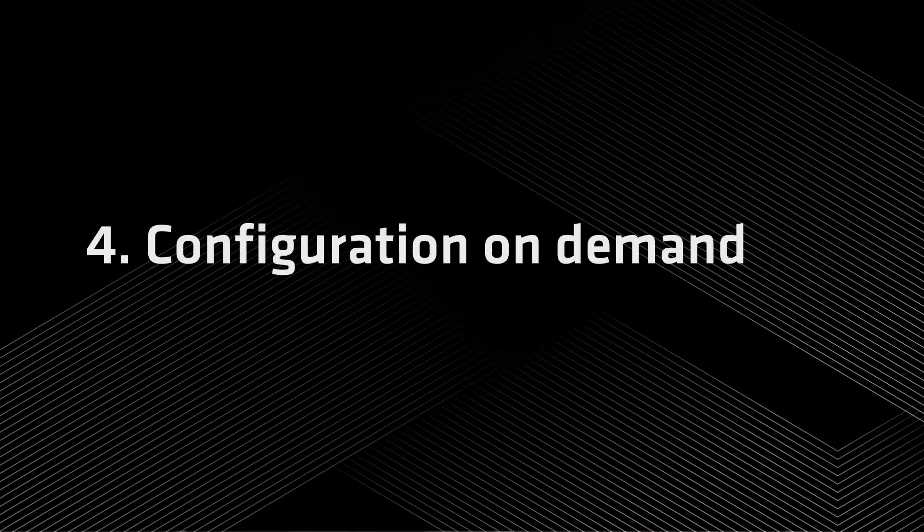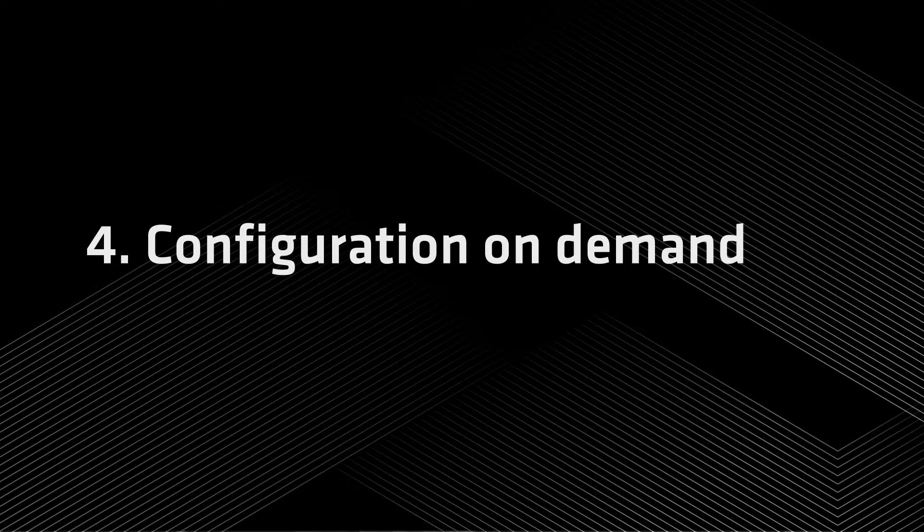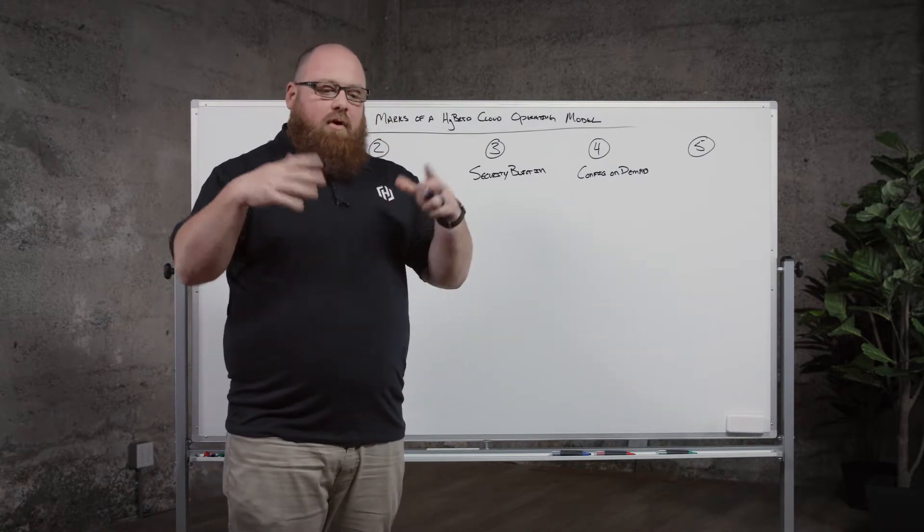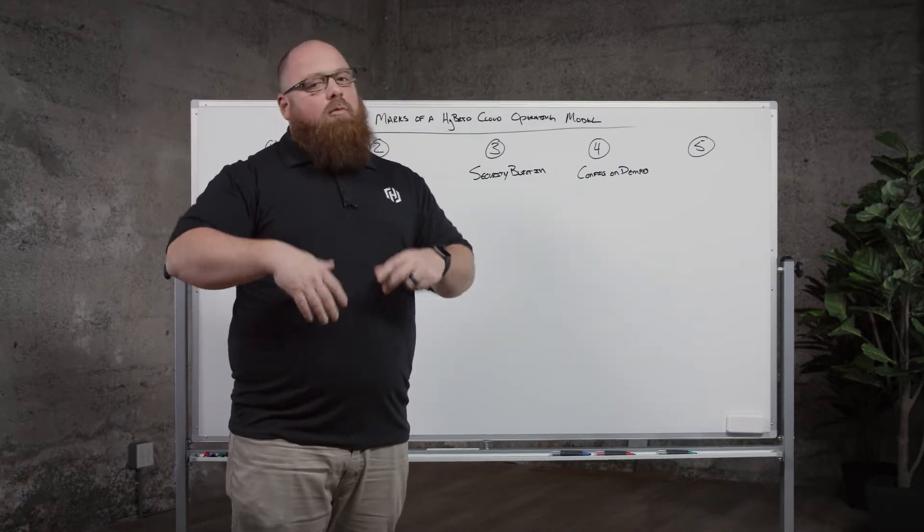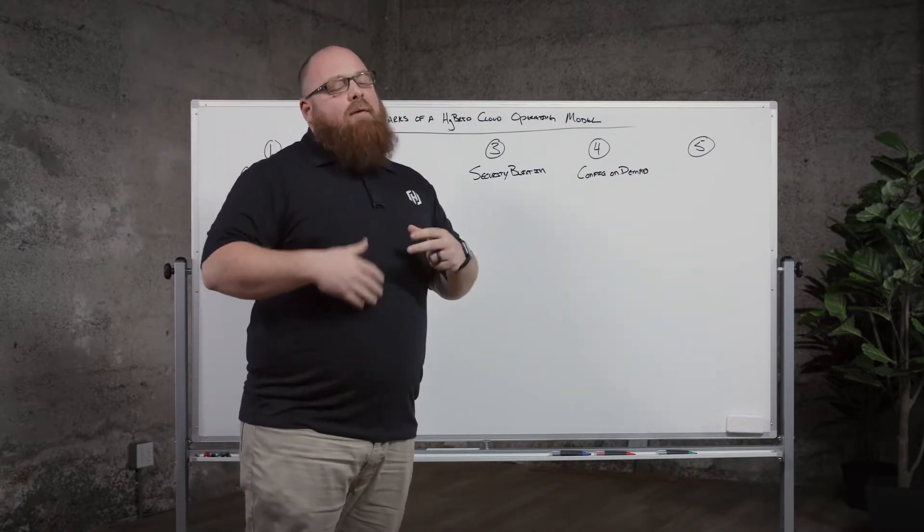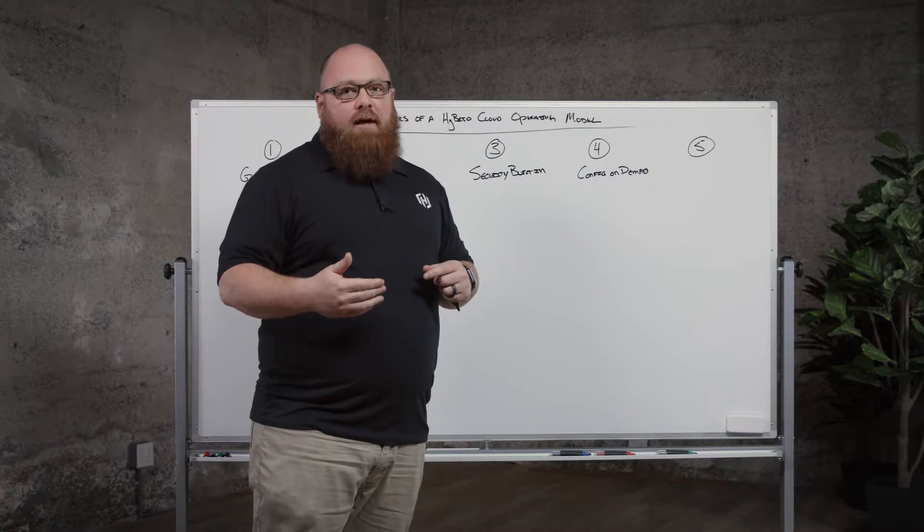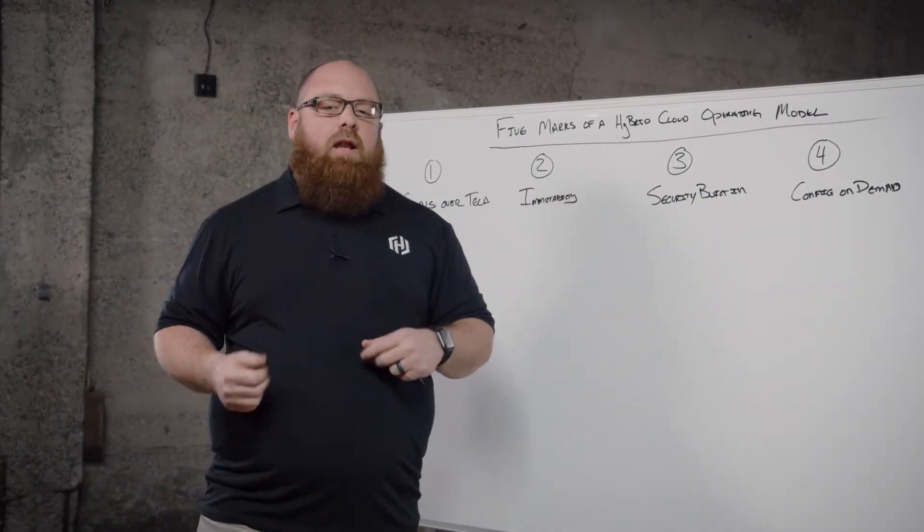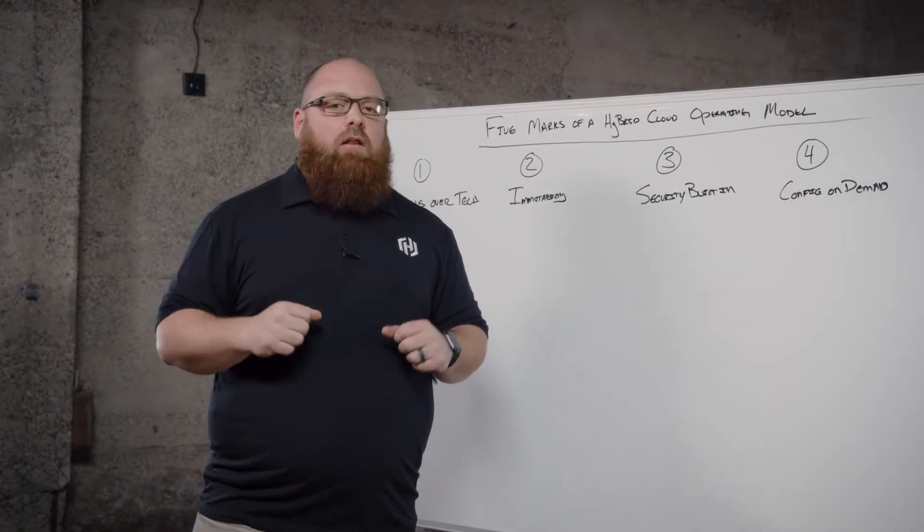The fourth mark of a hybrid cloud operating model is that you want to actually have configuration on demand. Traditionally in systems, how we've looked at this is that we've built a VM or we've built some type of application, and then we push configuration out and then maintain it over a long period of time. Now, the question I would ask you is what's the difference between a production web server and a development web server?